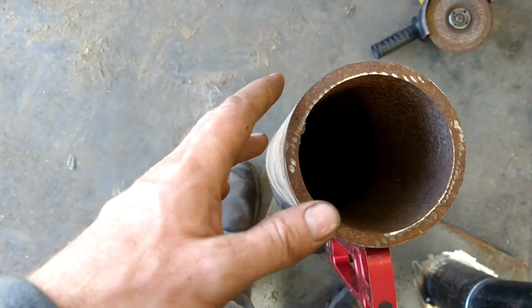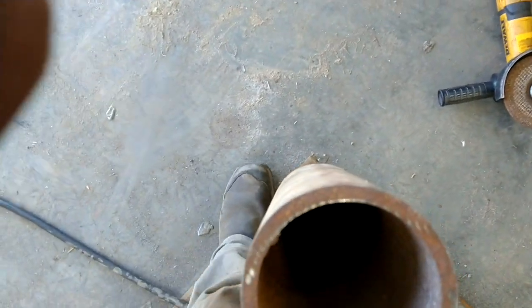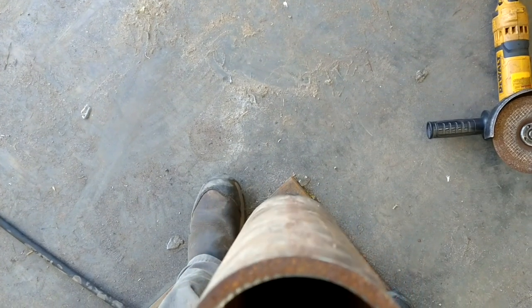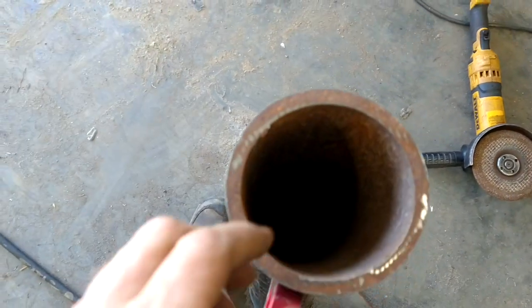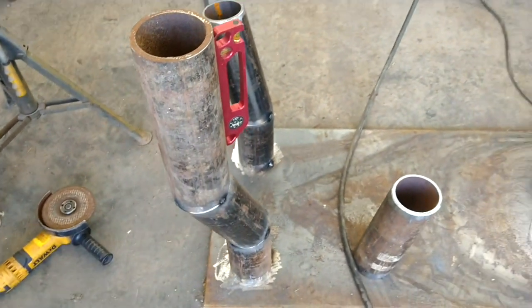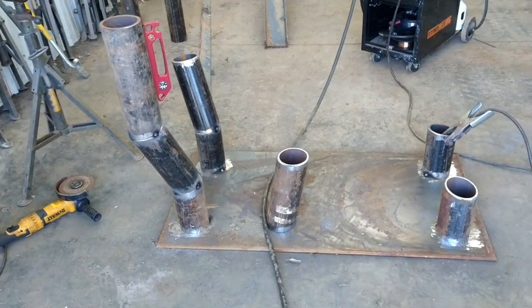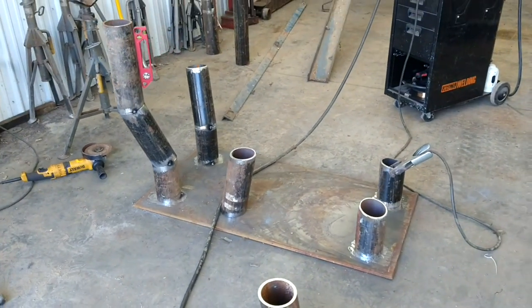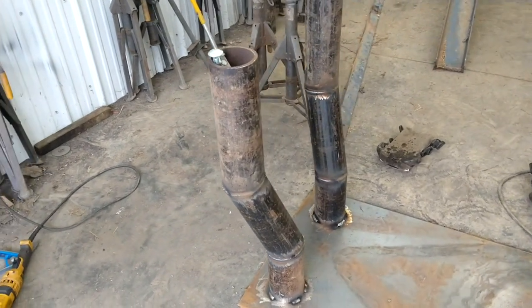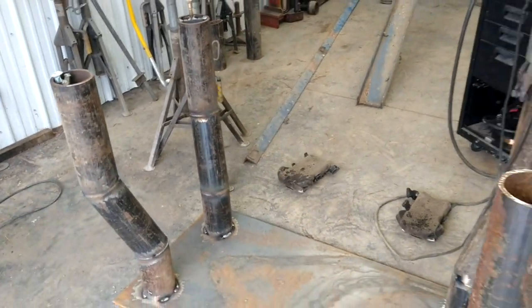So this puts the edge of the leg right at the corner of the table and I'm going to put the adjusting foot right here on the outside edge, make it real hard to upset this thing. Starting to take shape.